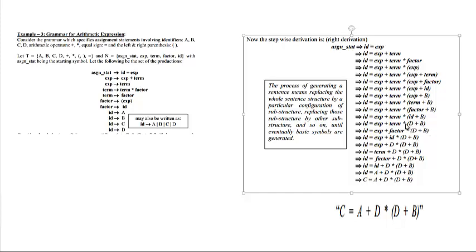This part is complete. Now we write the multiplication sign. We convert term into factor, then factor into ID, and ID = D. Now we write the plus sign. Then expression into term, term into factor, factor into ID, and ID = A. Finally, this ID = C, completing the entire derivation.